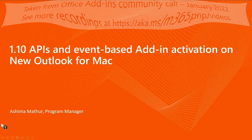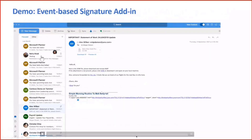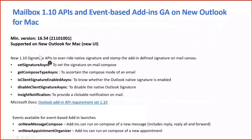So last time I was on this call, we had shared that we were in insiders, and the good news is that now Mailbox 1.10 APIs and event-based add-ins are in GA. The minimum version for the New Outlook for Mac is 16.54, supported on the New Outlook for Mac. You need to toggle on that switch on the New Outlook for these capabilities to start working.